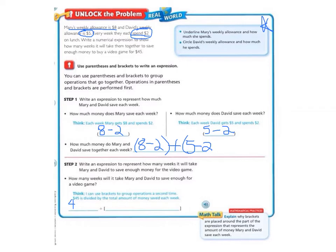So we want to take 45 because that's how much the video game is. We'll put a little box around that. And we're going to divide that by the amount of money they save each week, which is the $8 minus $2 plus the $5 minus $2.